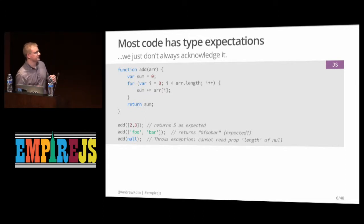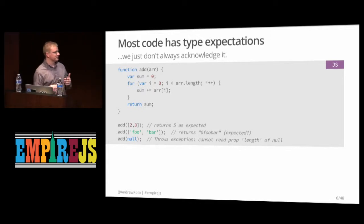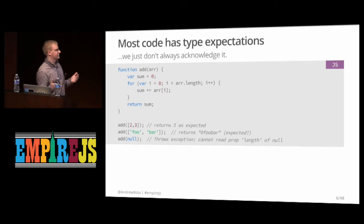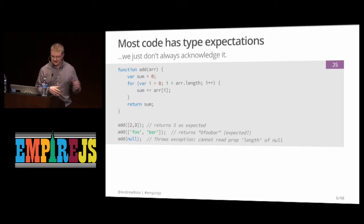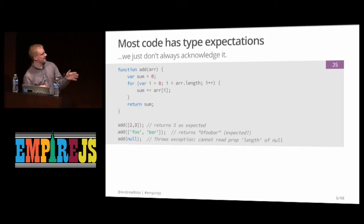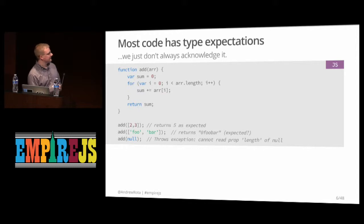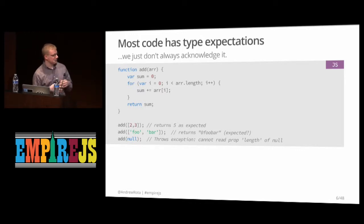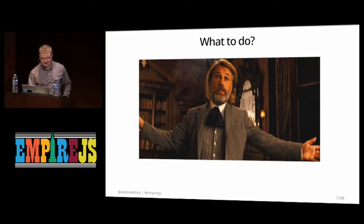Here's a basic example I'll refer to several times in this talk — a summing function. It takes an array of numbers, starts the sum at zero, iterates through the array, adds them to the sum, and returns it. If I add two and three I get five, which makes sense. But if I pass two strings I get something like 'zero foo bar', which isn't expected. And if I throw null in there, I get an exception — certainly not expected.